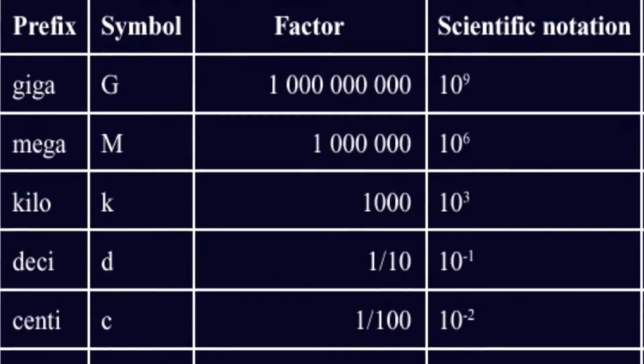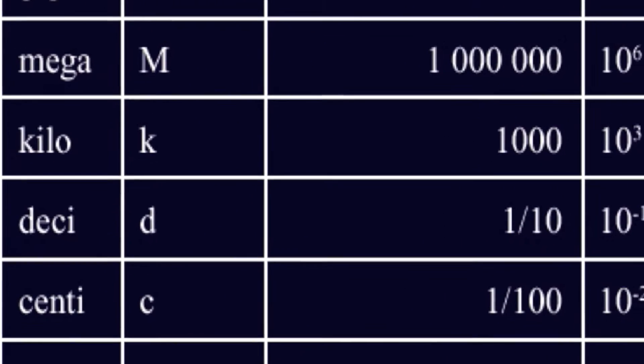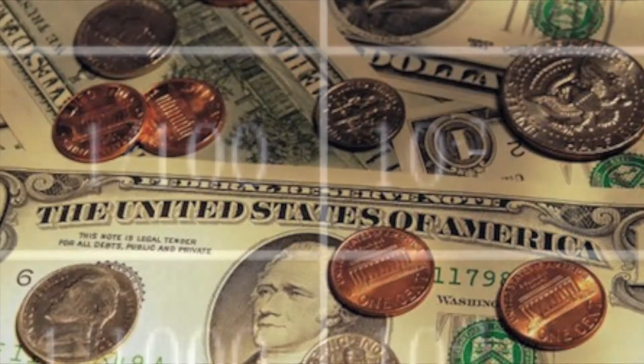Now we're going to take a look at prefixes that represent a number less than one. The first one is centi. This represents one one-hundredth of something. Centi is pretty easy to remember. We have a hundred cents in a dollar, then you can also think of a century. There's a hundred years in a century.